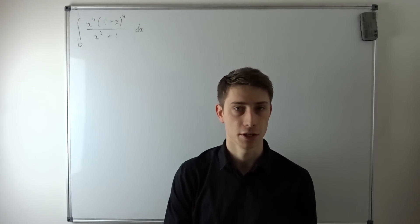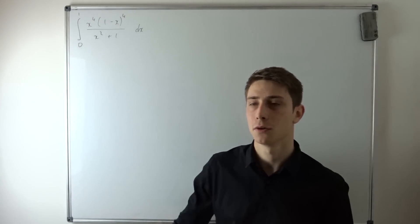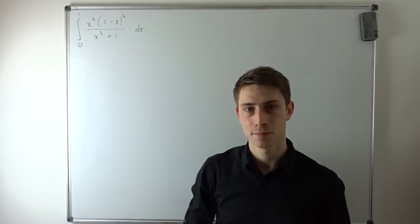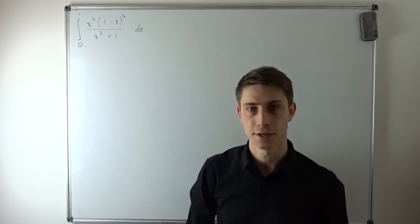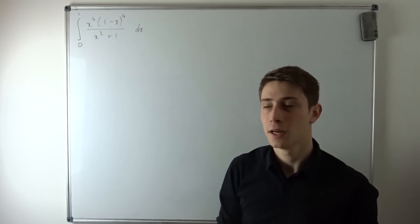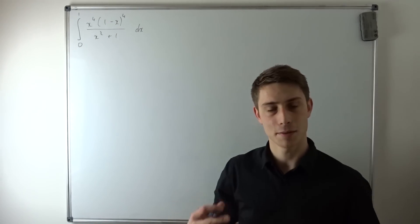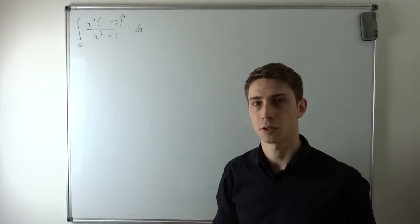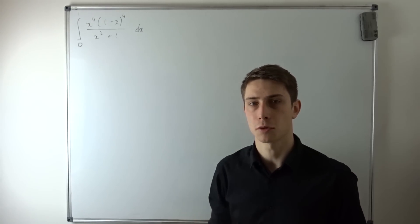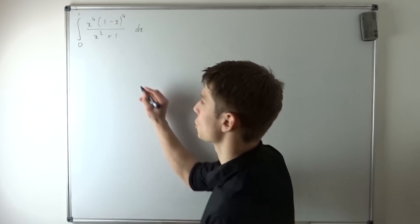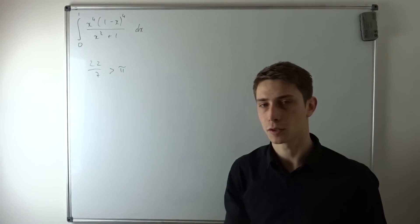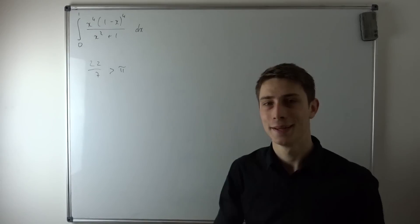Good morning fellow mathematicians, welcome back to another video. Today we are going to talk about this integral from 0 to 1 of x to the fourth power times (1 minus x) to the fourth power over (x squared plus 1) dx. It's not just about this integral — we want to prove something today. Since I am becoming a teacher, I sometimes tell my students: if you don't like working with pi, just use 22 over 7. We want to show that those two aren't equal, and more specifically, we want to show that 22 over 7 is greater than pi.